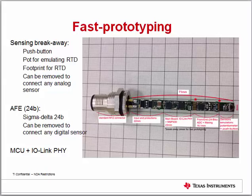Taking a closer look at the application, it can help ensure fast prototyping. It has a push button and a potentiometer for emulating the RTD, which can be removed to connect any analog sensor. It uses an analog front end with a 24-bit sigma-delta ADS1220 ADC, which can also be removed to connect any digital sensor. The application primarily features the microcontroller and the IO-Link PHY.